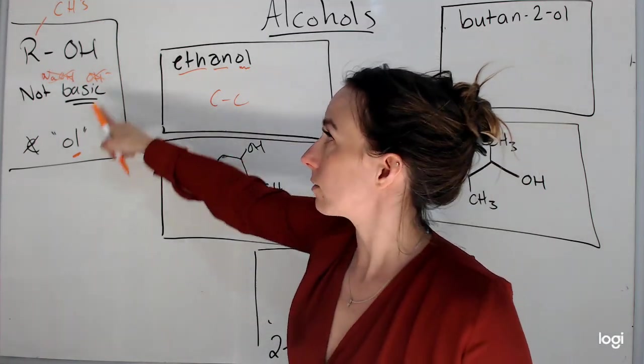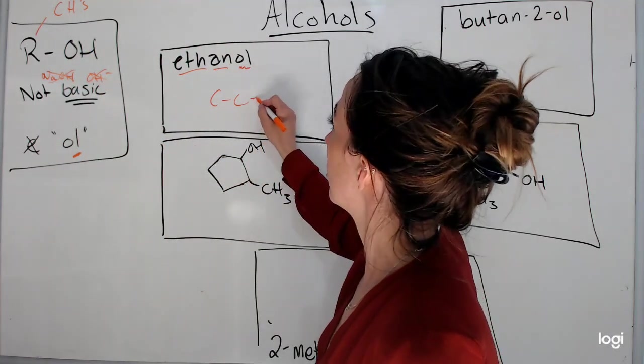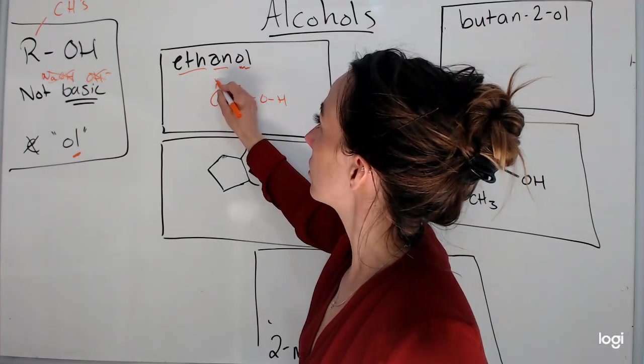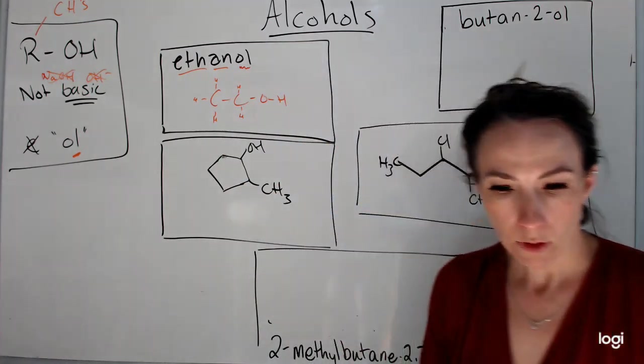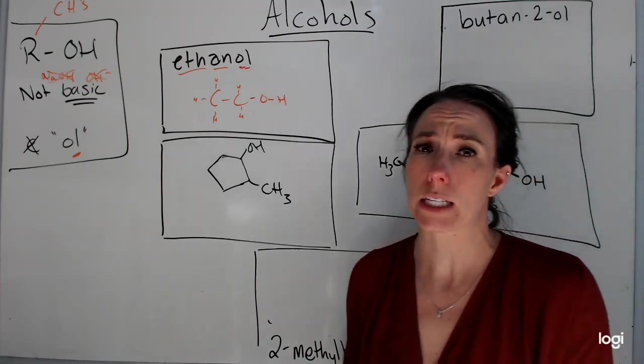And the OL now tells me that it's an alcohol and that I have an OH in there. So here's my O and my H. Fill in the rest of my hydrogens. And this is ethanol now, what ethanol would look like.